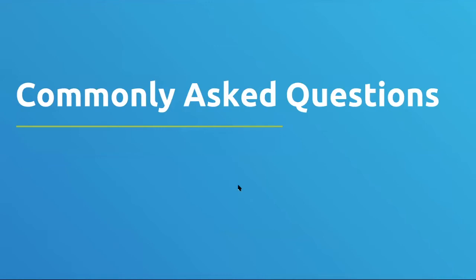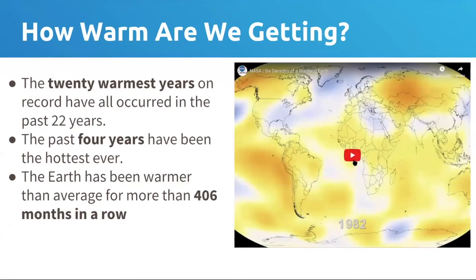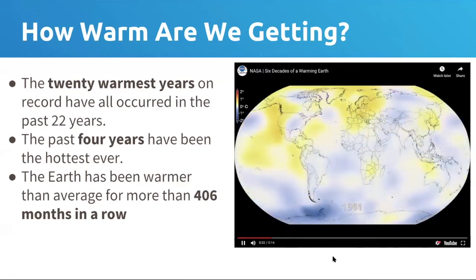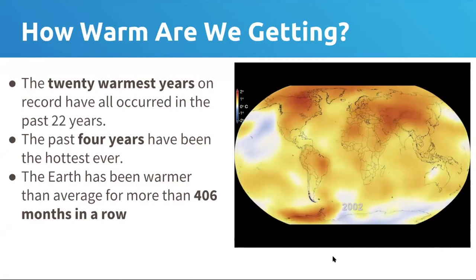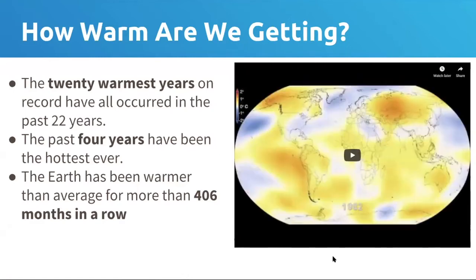We're going to go through some commonly asked questions. Exactly how warm have we been getting? I like to point people to the NASA Goddard Institute for Space Studies, or NASA GISS, based in New York City. They release updates and models of global temperature reconstruction. This video animation of how temperature has been changing comes from the NASA GISS website. Every year they do press releases on what the global average temperature was and how it compares to all of their records. We keep getting these record-breaking years. The warmest year on record is 2016; 2017 was the second warmest; 2018 was the third warmest.